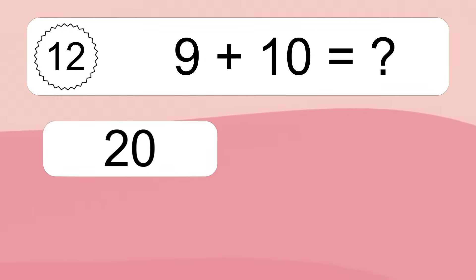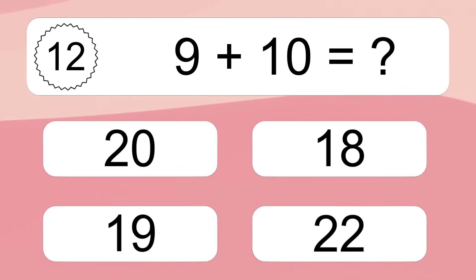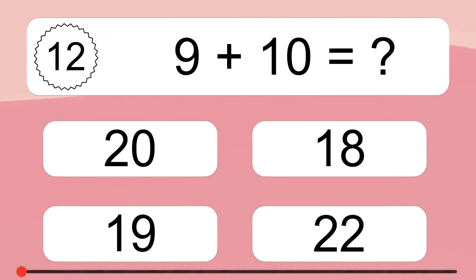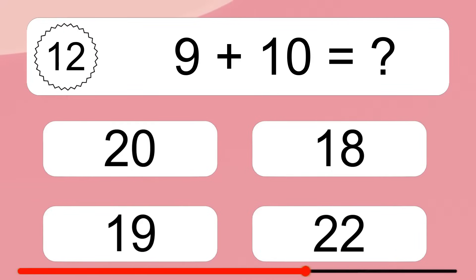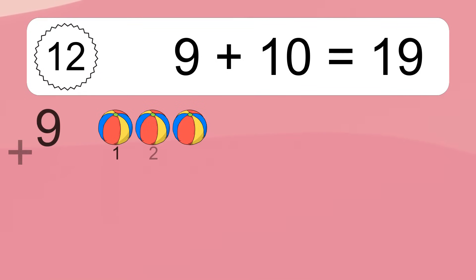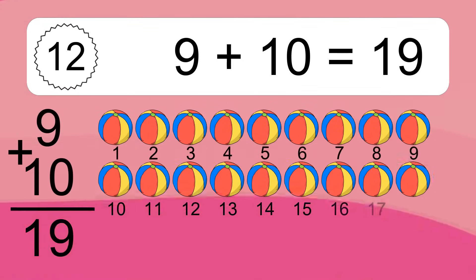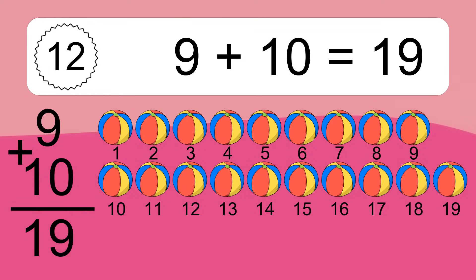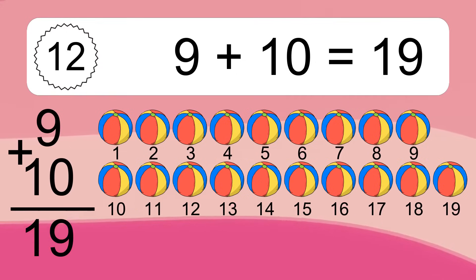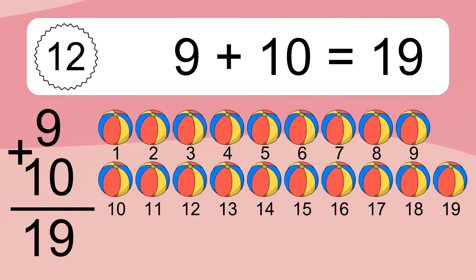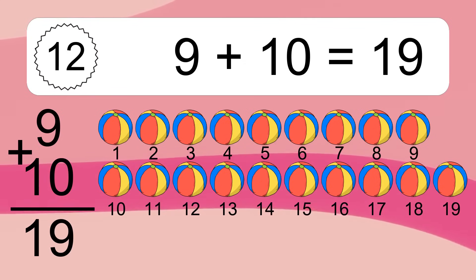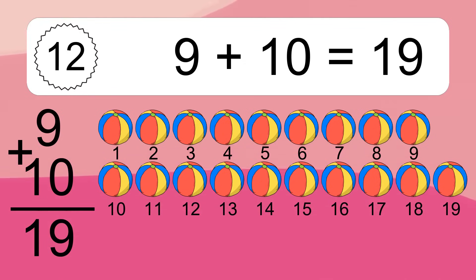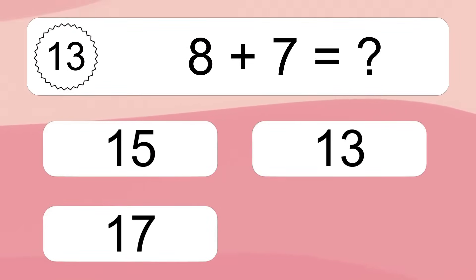9 plus 10 equals what? Let's count it: 1, 2, 3, 4, 5, 6, 7, 8, 9, 10, 11, 12, 13, 14, 15, 16, 17, 18, 19.